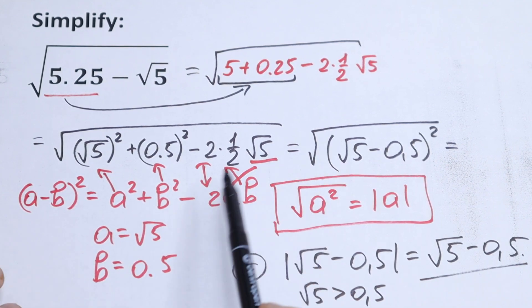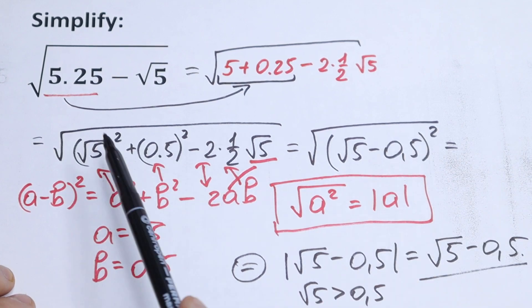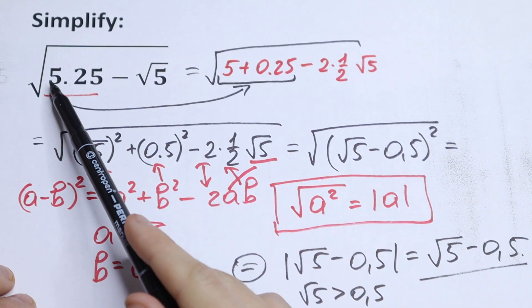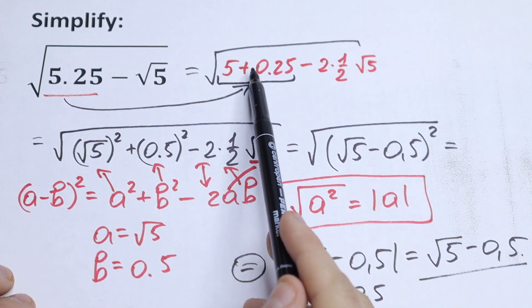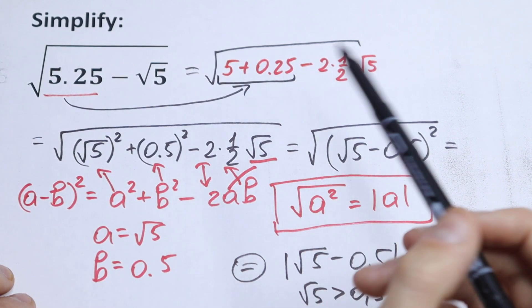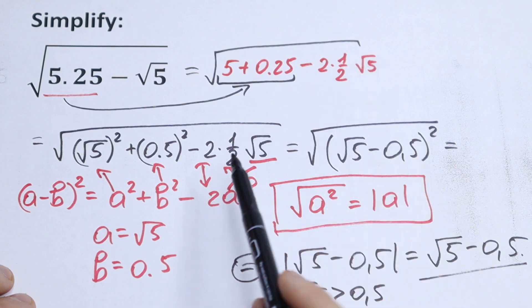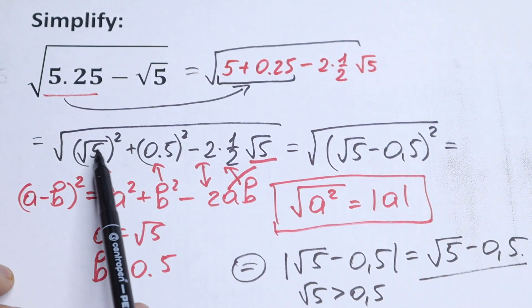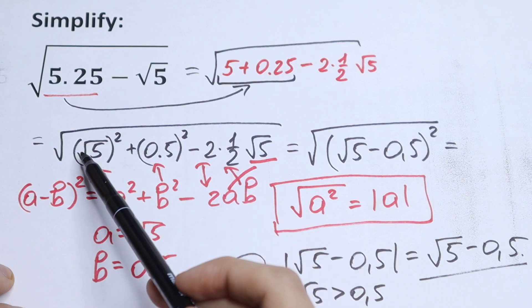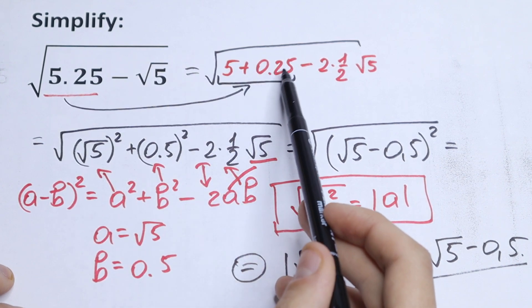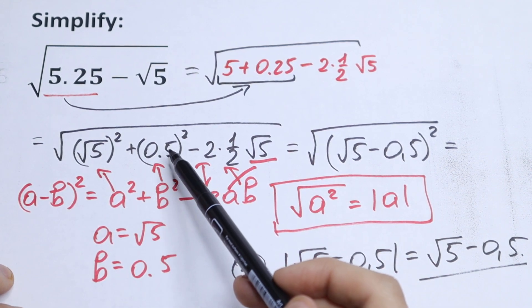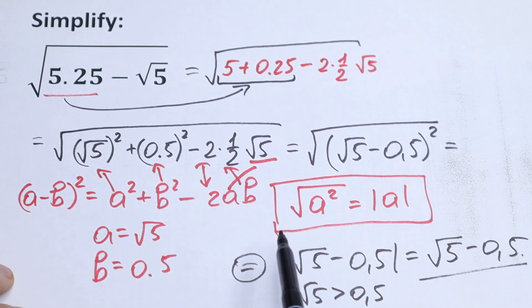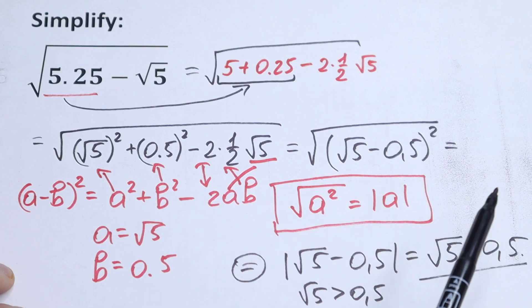If you have any question, write it in a comment. We created a formula right here using a little trick: writing 5.25 as 5 plus 0.25, creating the product because we need 2ab, writing 5 as square root of 5 squared, and 0.25 as 0.5 to the second power. That gave us our 2ab, and that is our formula.